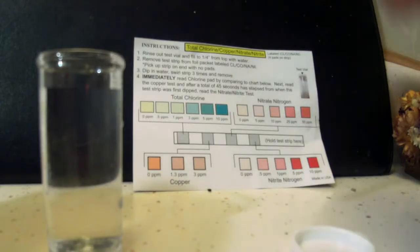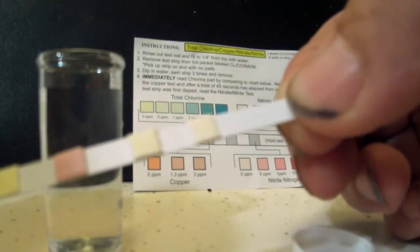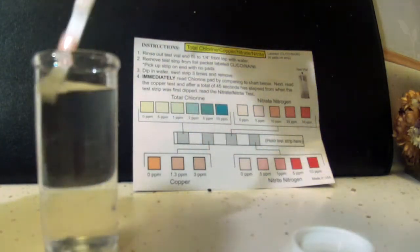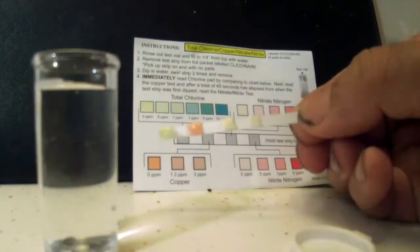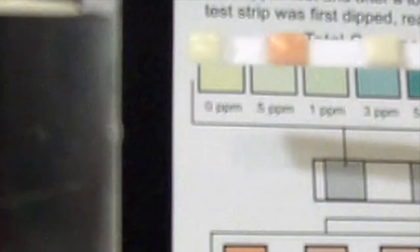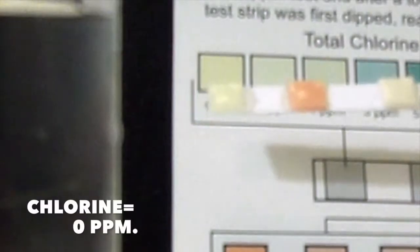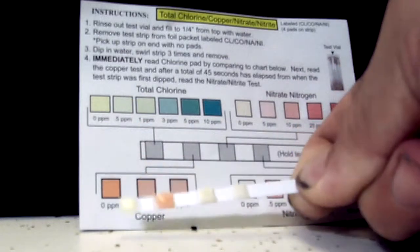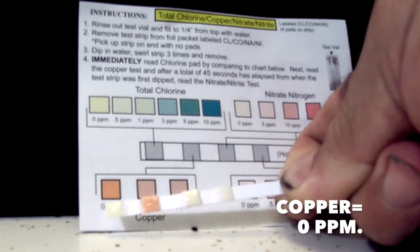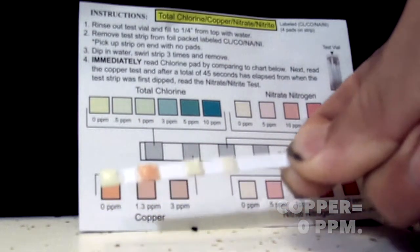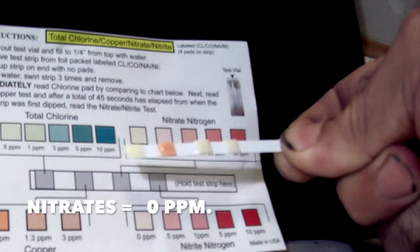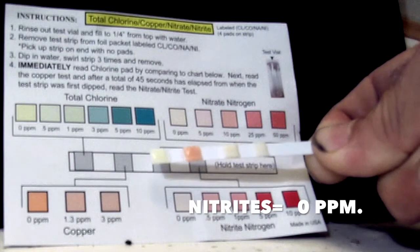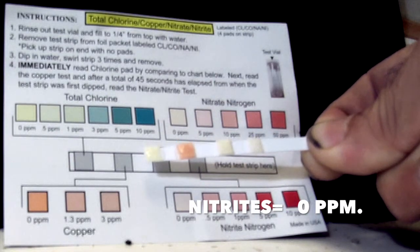The first step we'll be testing is for chlorine, copper, nitrites and nitrates. You get it in there, give it a little bit of a swirl. Immediately you're going to be testing for chlorine, checking it to the card. In this case you can see that I was reading zero parts per million, also for copper. The copper color indicates zero. Nitrates, zero parts per million and down below with the nitrites again reading zero parts per million.